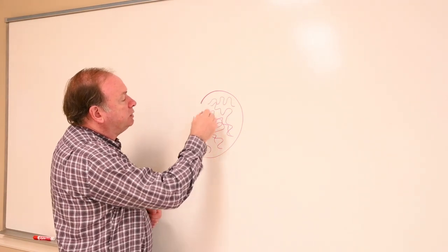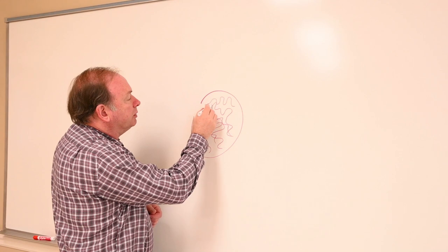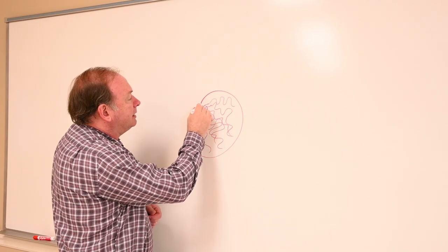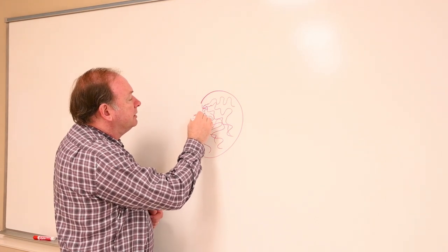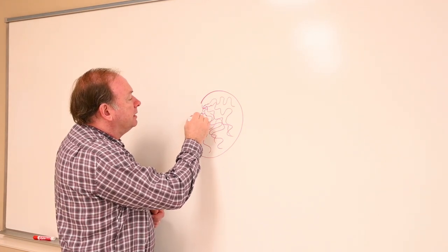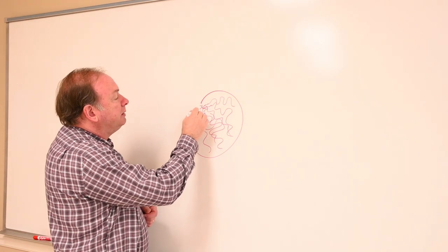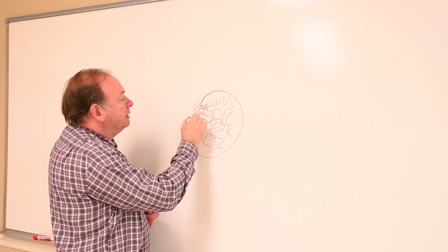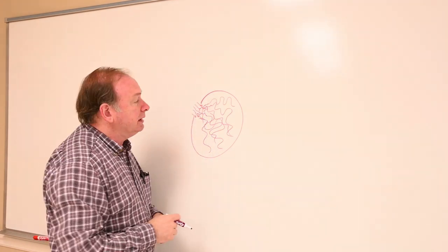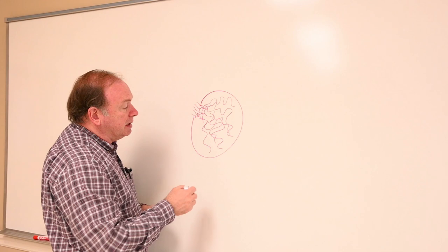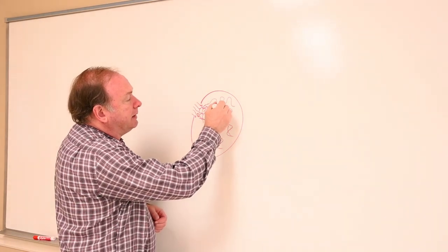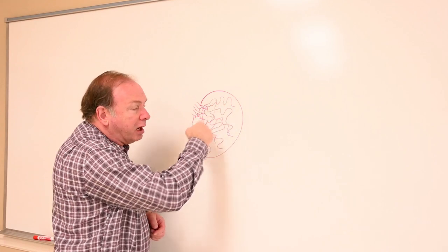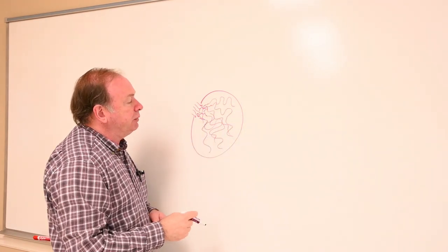There's one location on the side of the testis where these tubules come together and make an interconnected network of passages, kind of like different streets that pass through town. Eventually they lead into small ducts that lead out of the testis and to the epididymis that lies adjacent to the testis. We're going to begin our look at the male reproductive system by looking at a cross section of one of these small tubules.